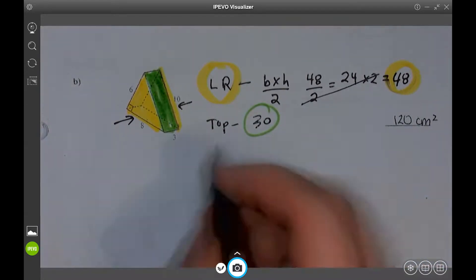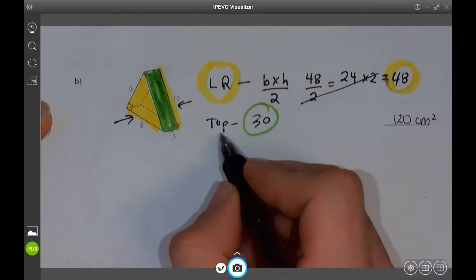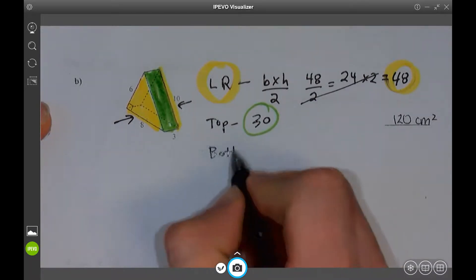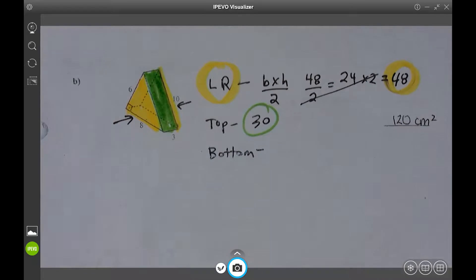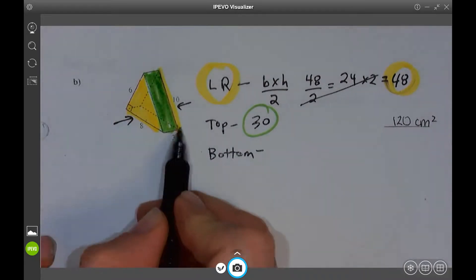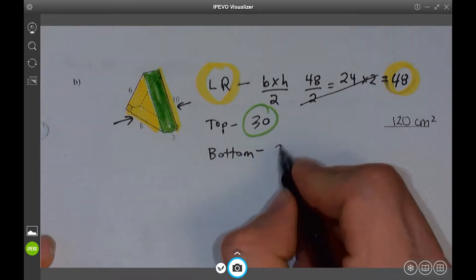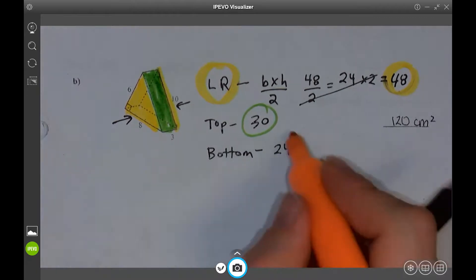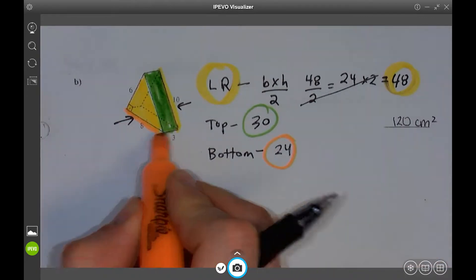Let's go ahead and do bottom. Since we did top, let's do bottom. 8 times 3. 24. That's my bottom down here.